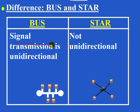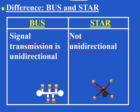Signal transmission is unidirectional in BUS topology, since signals travel through the single cable. In star topology, signal transmission is not unidirectional — signals can travel through each point-to-point connection between the switch and individual hosts.